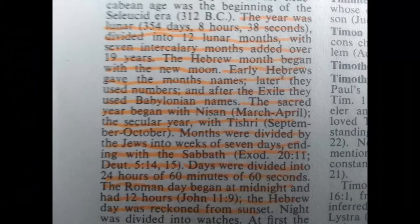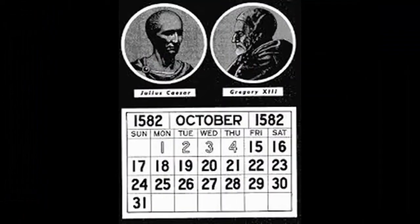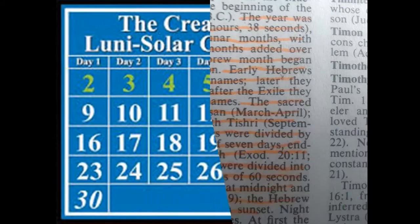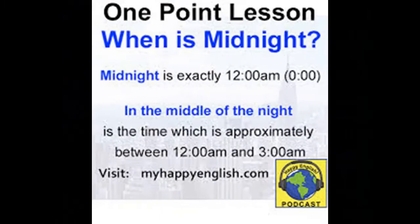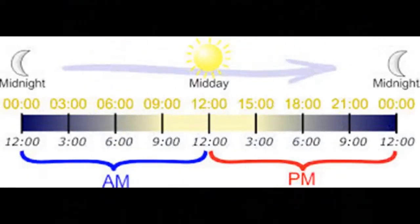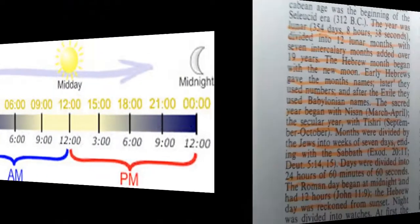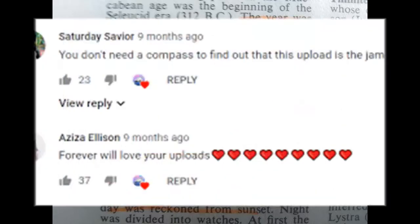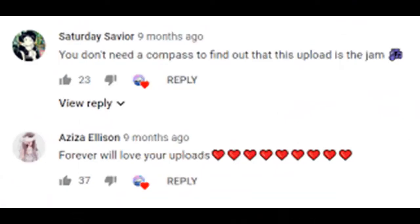The Roman day began at midnight, so we go by a Roman Gregorian calendar, but we are supposed to go by the Creator's calendar. We've been taught that a day begins at midnight — meaning the middle of the night — which doesn't make sense. It also states the Hebrew day was reckoned from sunset, which is wrong as well, but we're going to correct all of these throughout this lesson.